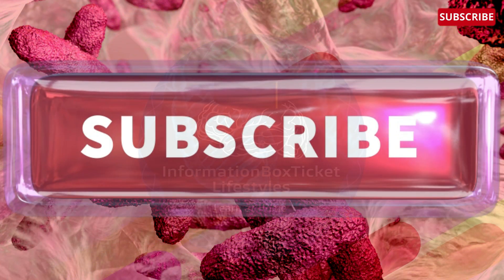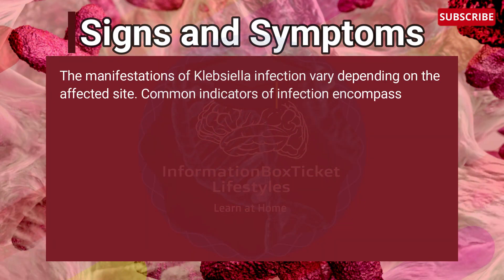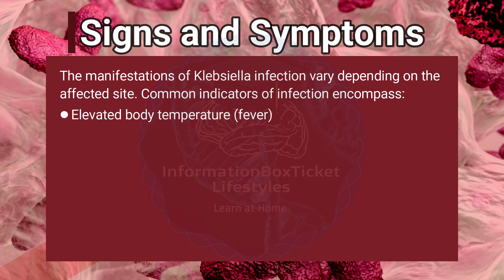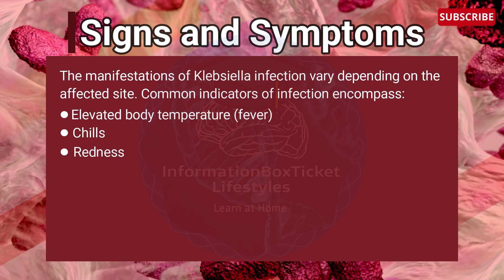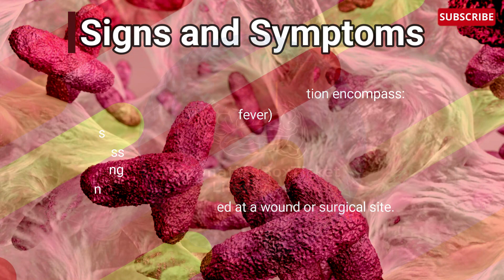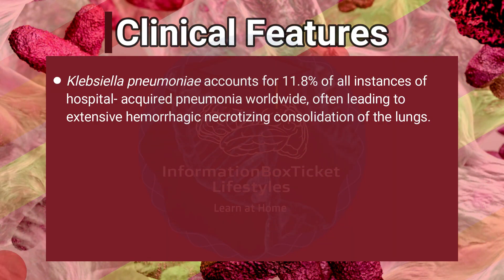Signs and symptoms of Klebsiella infection vary depending on the affected site. Common indicators of infection encompass elevated body temperature, fever, chills, redness, swelling, pain, and discharge or pus observed at wound or surgical sites.